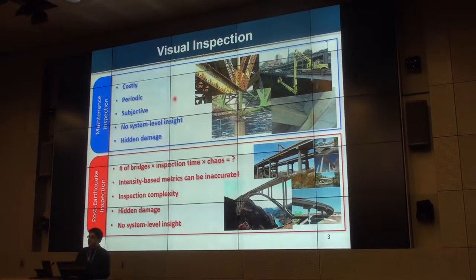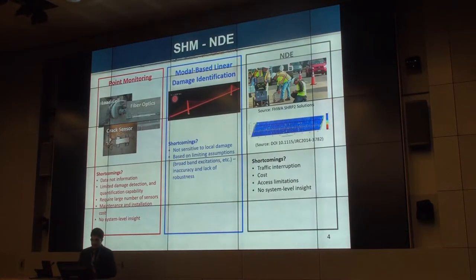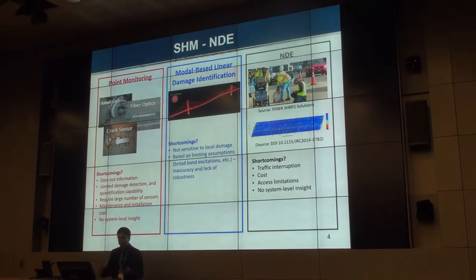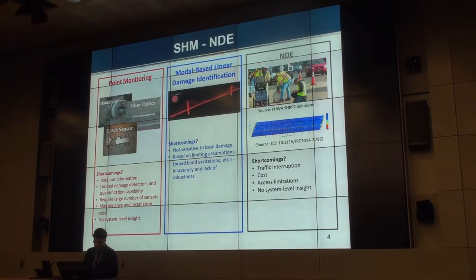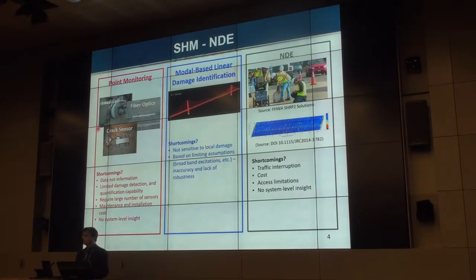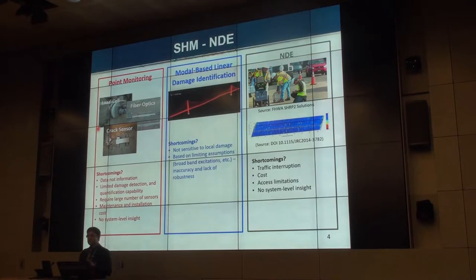For post-earthquake assessment we have to add the element of pressure, time, and the chaotic situation after an event. The inspector may have a family affected by the earthquake and might not be available quickly. There is room for technology contribution. Different methods have been developed: one is point monitoring — installing sensors at different locations of the bridge — but the problem is these provide a lot of data, not actionable information. Structural health monitoring model-based systems and damage identification are popular in the literature, but these methods are known to have little or no sensitivity to localized damages in bridges.